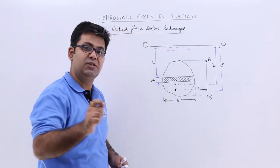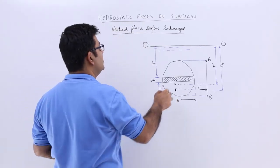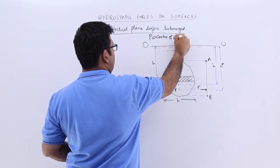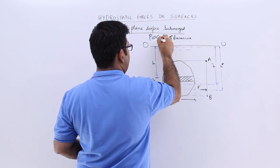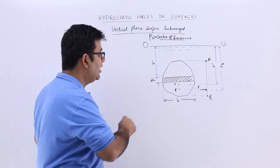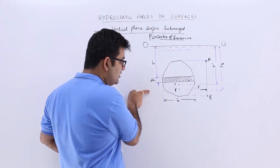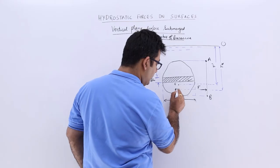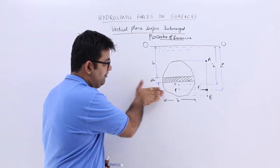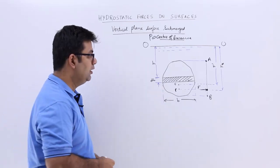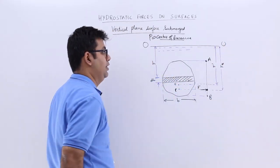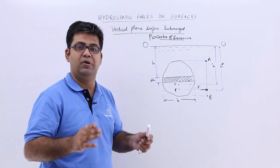Then you have a point P, known as the center of pressure. This center of pressure is the point on which we assume the entire hydrostatic force is acting. If you look at the side view, the projection of point P gives us the point where the entire hydrostatic force F acts. The distance of this center of pressure from the free surface is H-star — this is a standard notation you have to remember.